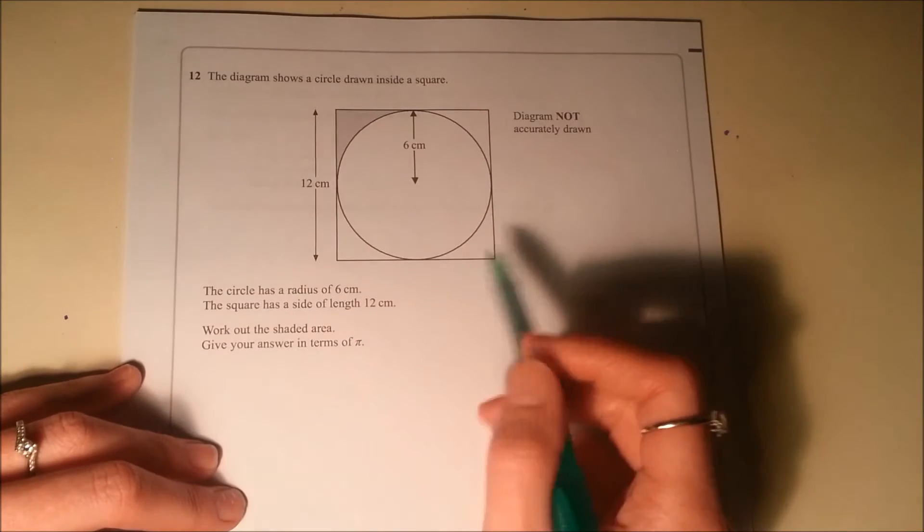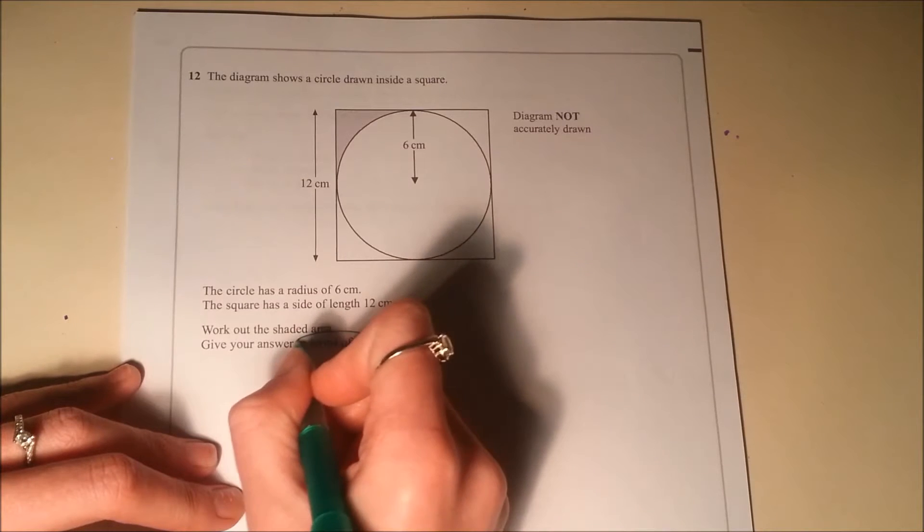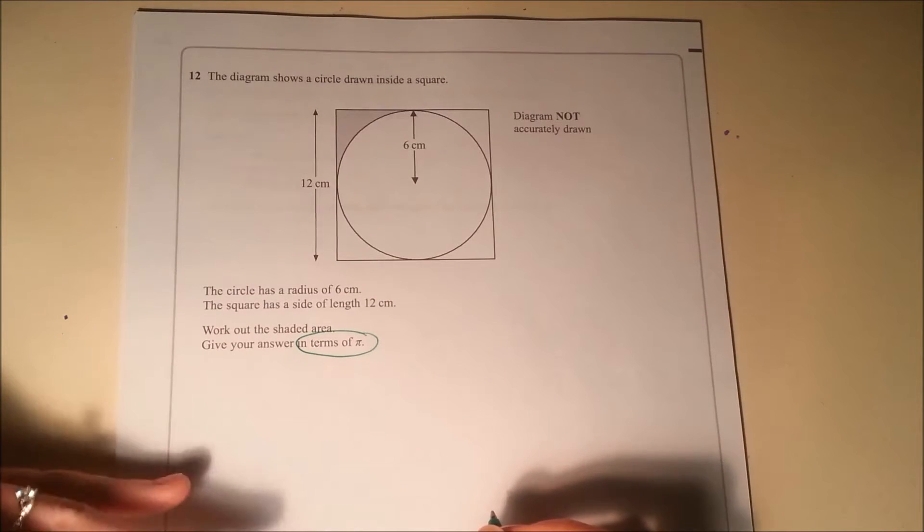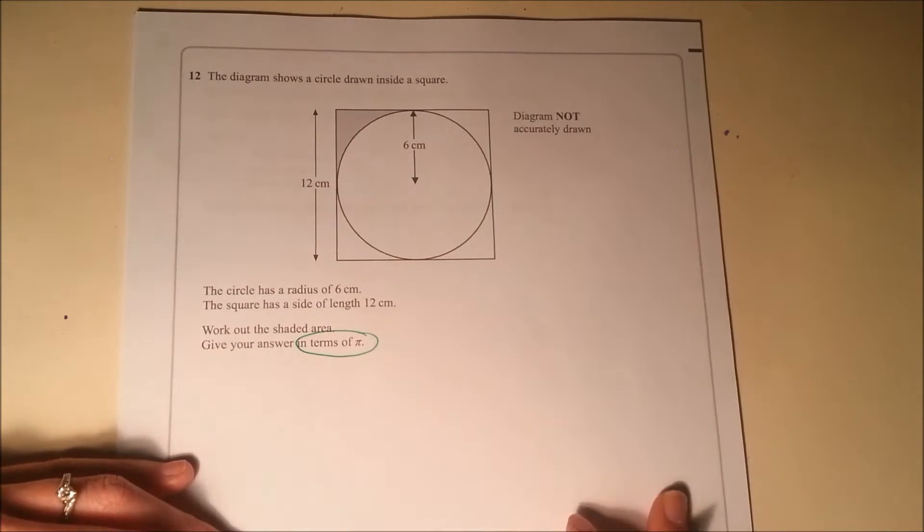OK, number 12. Bit unusual seeing a circle question on a non-calculator paper, but if we look, we've got to give our answer in terms of pi. So that means we're going to do the calculations as we would normally, but we won't be able to work out a final decimal answer.